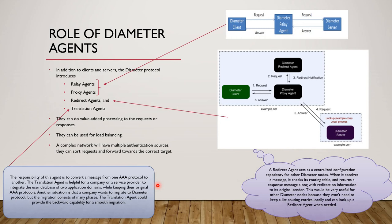The translation agent translates between Diameter and another AAA-based protocol, such as RADIUS. A practical use case is when a company wants to migrate to Diameter but the migration has multiple phases — the translation agent provides backward compatibility for a smooth migration. With this, we've covered all four agent types: relay, proxy, redirect, and translation.